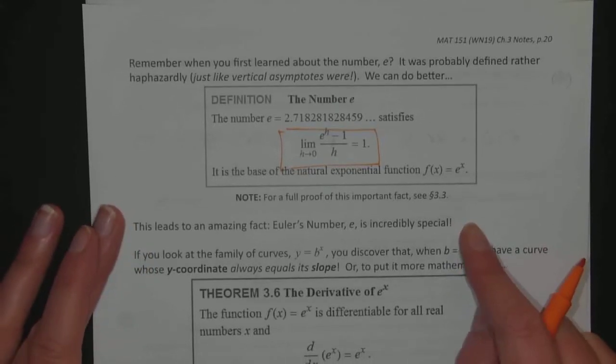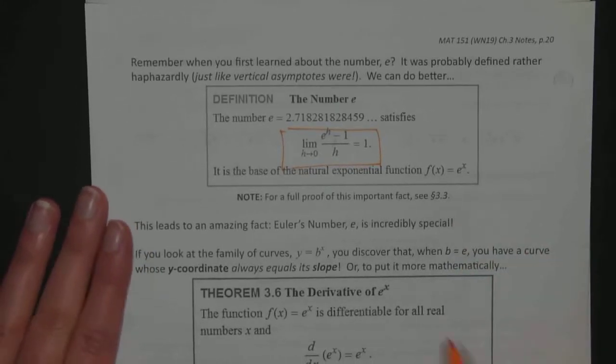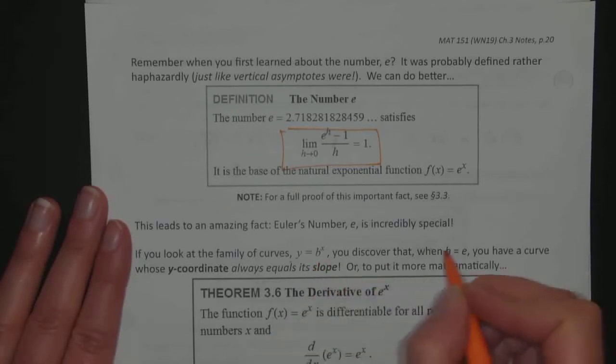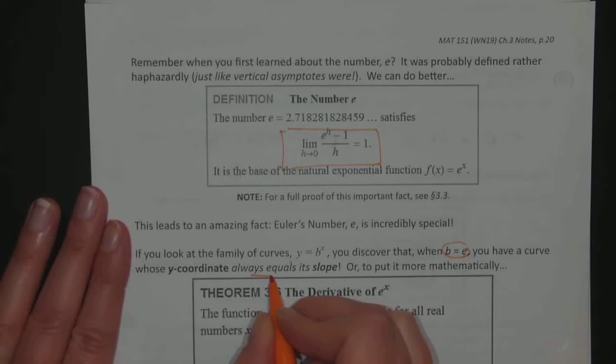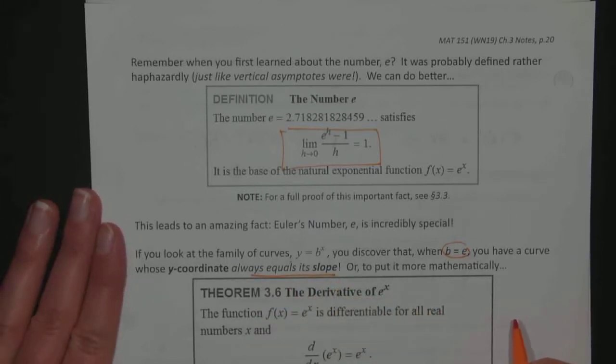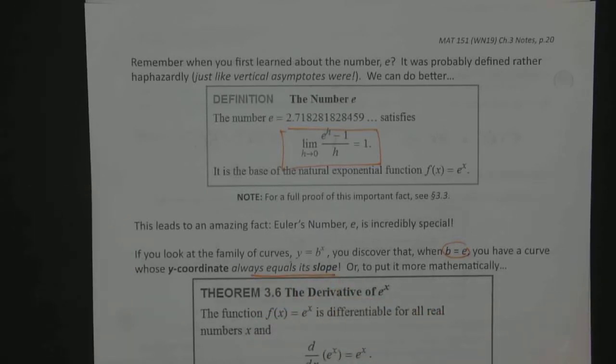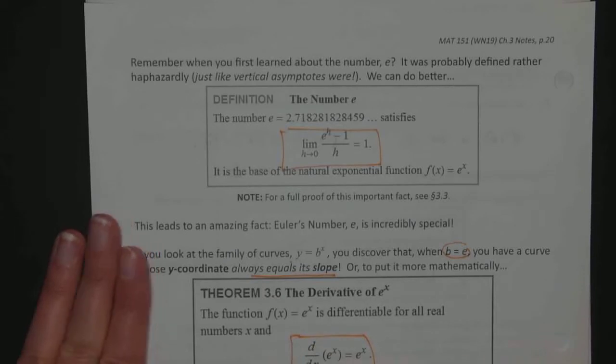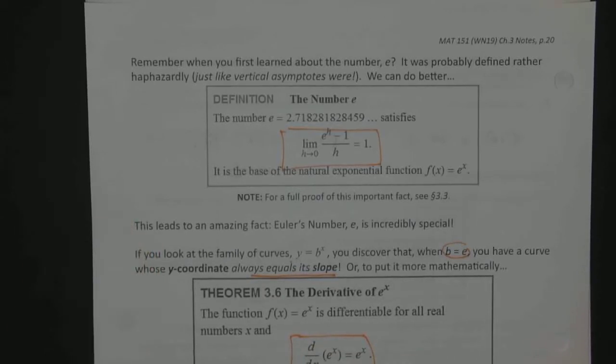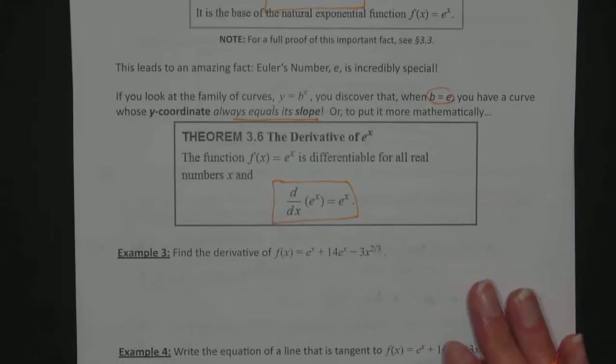If you look at the family of curves, y equals b to the x, only when b is e does the y coordinate always equal its slope. What that means, since the y coordinate always equals its slope, the slope is the derivative, that the derivative is the function value itself. So the derivative of e to the x is e to the x. That is the only function whose derivative is itself. It's a very unique function.